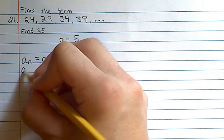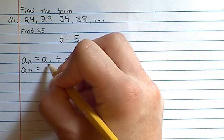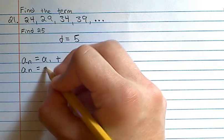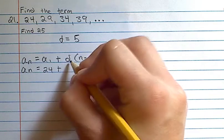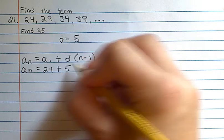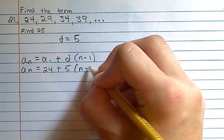we don't know an, but we know a1, which is our first term, is 24, plus d, our common difference we just found is 5, times n minus 1.